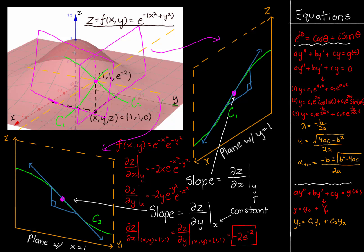For ∂z/∂x, we keep y constant, so the entire e to the negative y squared term is a constant. We take the derivative of e to the negative x squared using the chain rule, bringing the negative 2x down and multiplying with e to the negative x squared again, while e to the negative y squared remains a constant. For ∂z/∂y where x is kept constant, we get the same result except replacing x with y. So ∂z/∂x equals ∂z/∂y at the point (1,1), which equals negative 2e to the negative 2 times e to the negative 2.